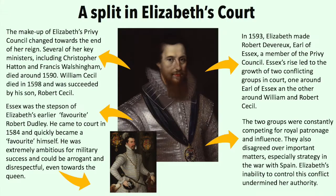The make-up of Elizabeth's Privy Council changed towards the end of her reign. Several of her key ministers, including Christopher Hatton and Frances Walsingham, died around 1590. William Cecil died in 1598 and was succeeded by his son, Robert Cecil. In 1593, Elizabeth made Robert Devereux, Earl of Essex, a member of the Privy Council.